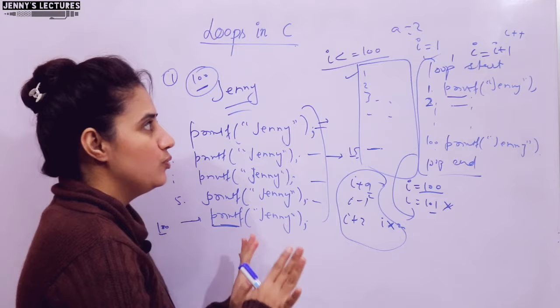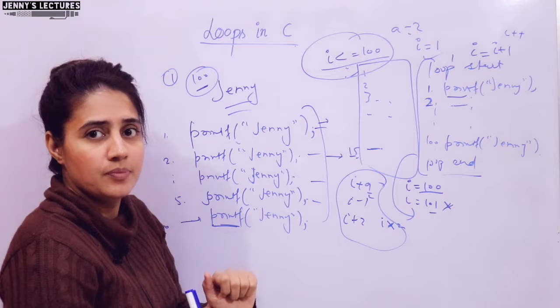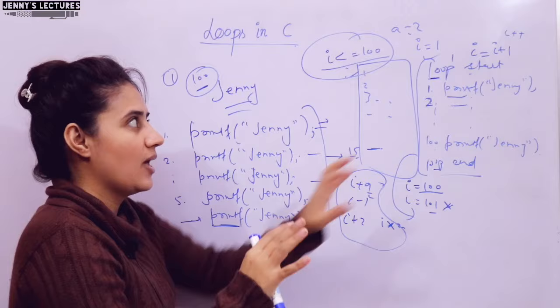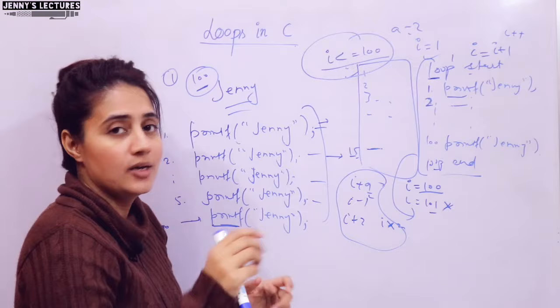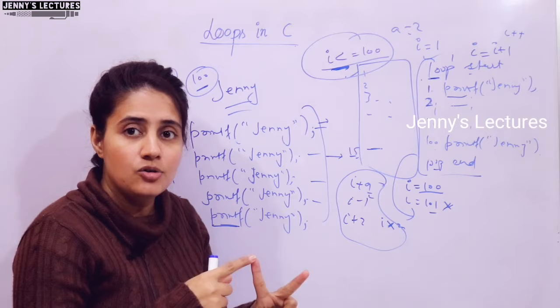So now, based on the position of the termination condition — where you are putting this condition in the loop — loops can be classified into two types: entry controlled and exit controlled loops. In entry controlled loops, the termination condition is placed at the starting of the loop. Means first the condition would be checked. If the condition is satisfied — condition is true — then only the body of the loop would be executed, meaning control will enter into the loop. Otherwise control will go out of the loop body.